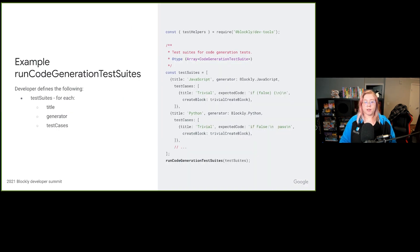Here's a code sample for RunCodeGenerationTestSuites. As you can see, configuration for multiple different language generators can be made and then passed into RunCodeGenerationTestSuites. I'd recommend defining at least a simple test case. For an example, I'd recommend checking out our Mocha tests for field multi-line input in Blockly Core. You can check out our JS doc for the code generation test suite and code generation test case types to learn further about how you can configure these tests.